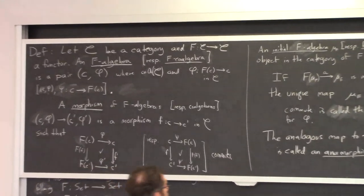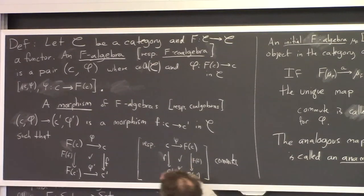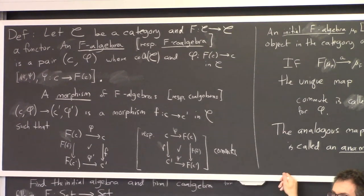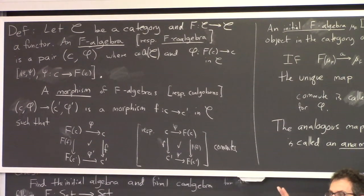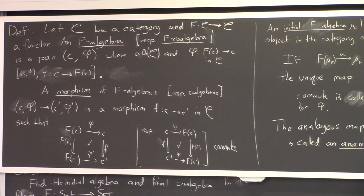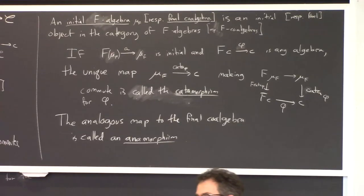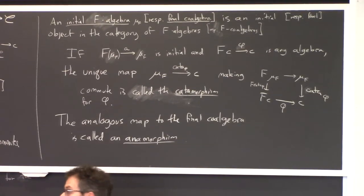The algebras and their morphisms form a category, and the initial object in that category is called the initial algebra. This gives you things like lists, the natural numbers, and binary trees. Co-algebras give you things like infinite streams and infinite binary trees.